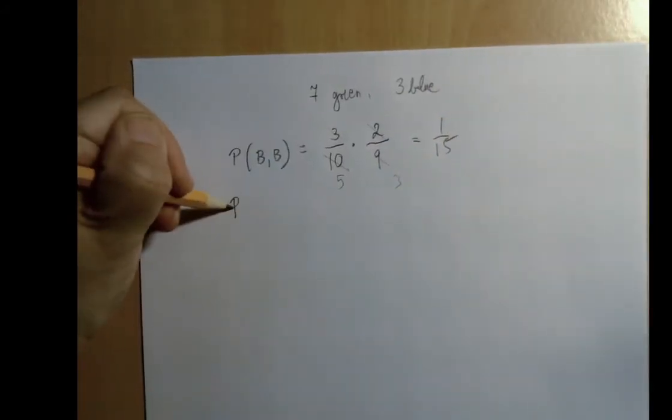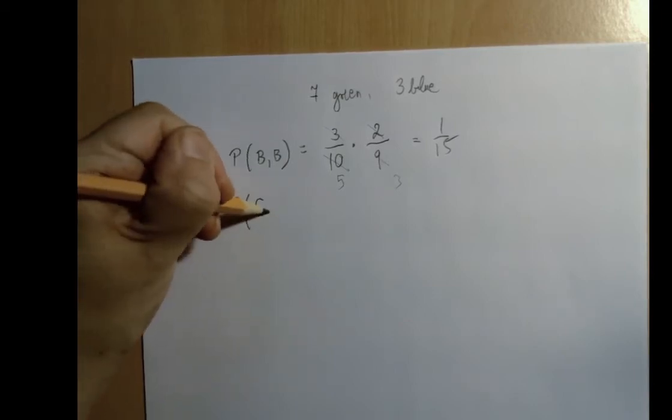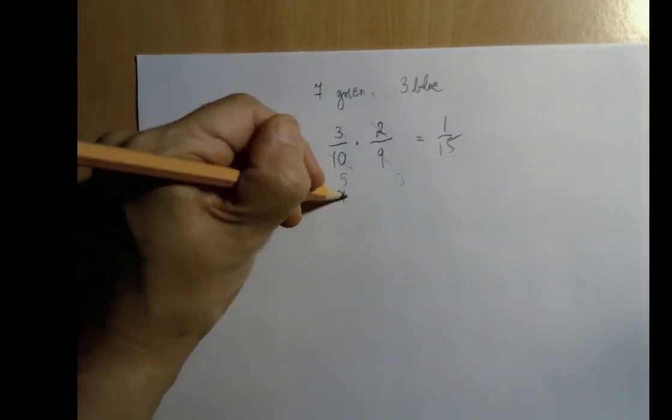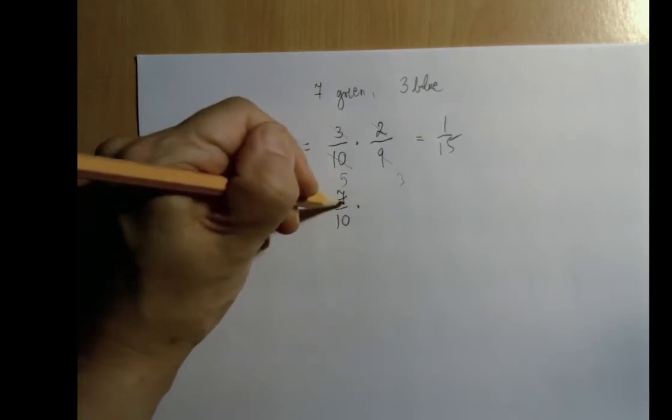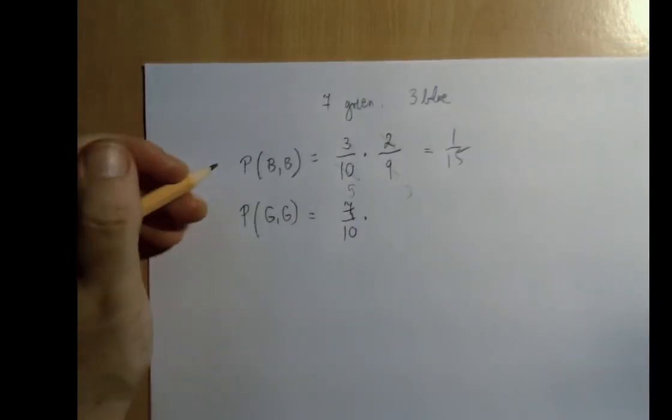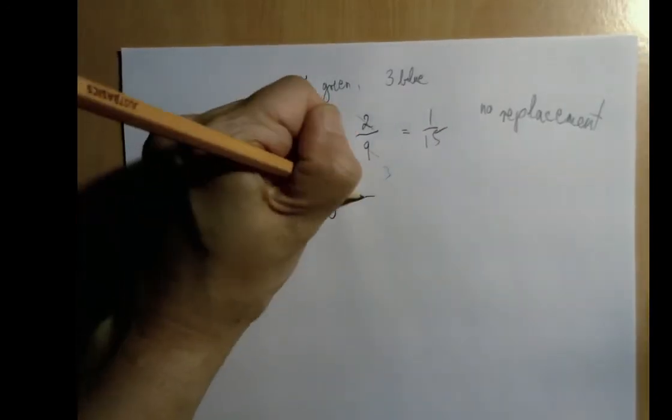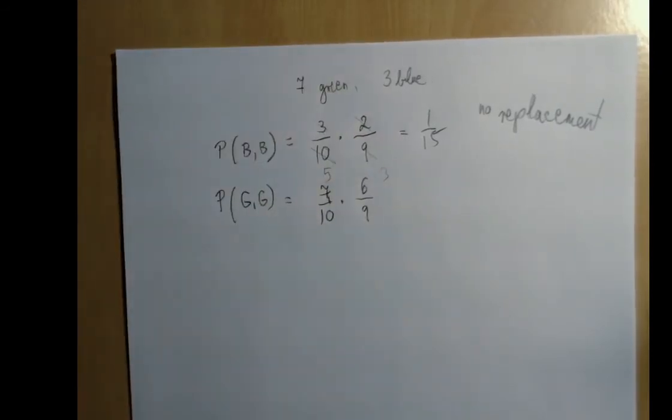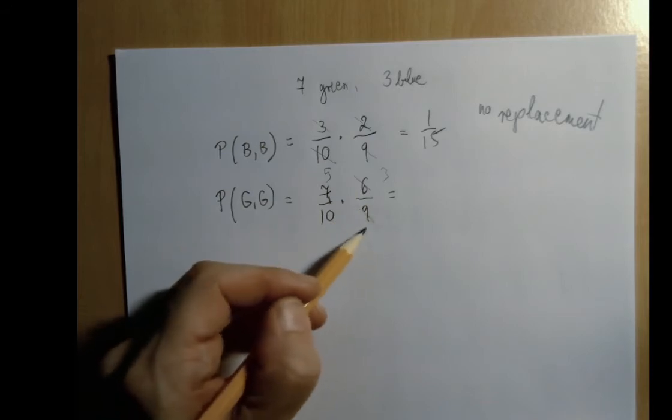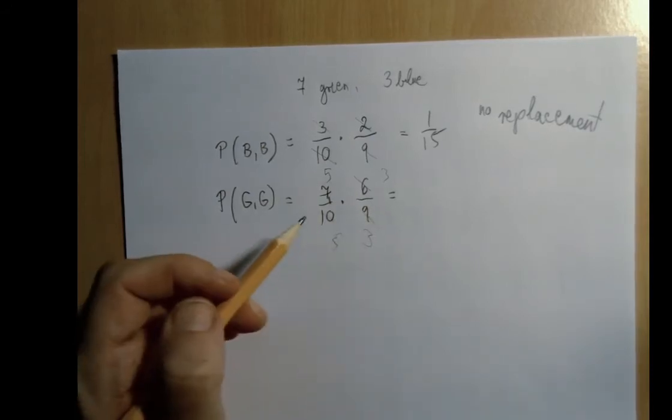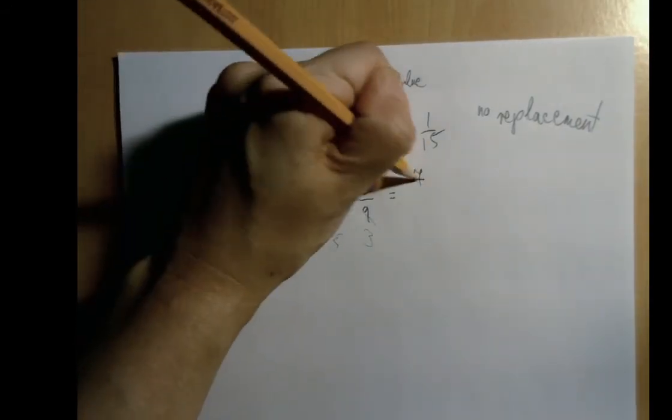The probability of green, green, would be, so the first one is 7 out of 10, but the second one isn't. Because there is no replacement, there are only 9 marbles left in the bag, out of which only 6 of them are green. This can disappear, and this is a 3, this is a 5. So this is 7 out of 15.